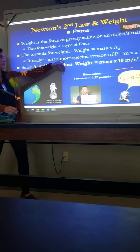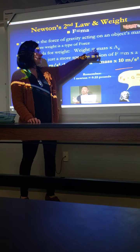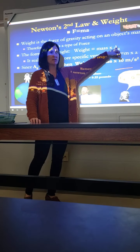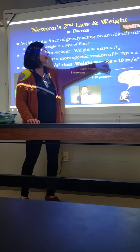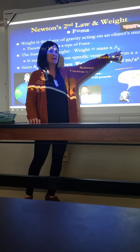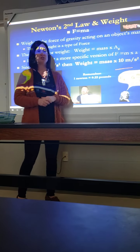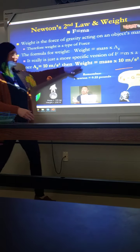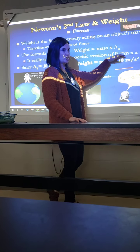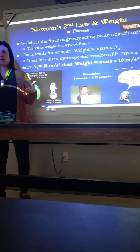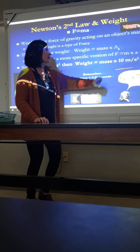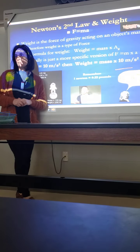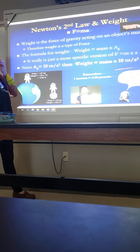Weight technically is a force as well because it's the pull of gravity on an object, and we just said gravity is a force. So weight has an equation: force equals mass times acceleration. If we substitute force for weight and acceleration for gravity, we get weight equals mass times the acceleration due to gravity. That's our new equation. It works the exact same way as force equals mass times acceleration — it's just the specific version of it.